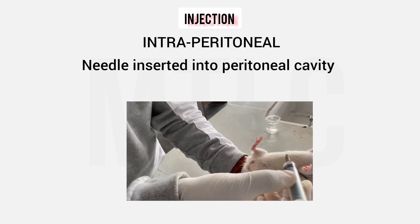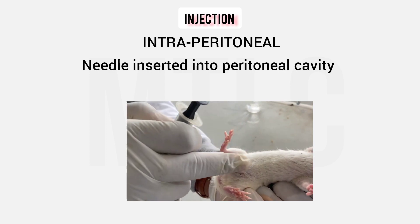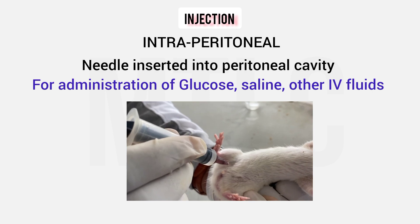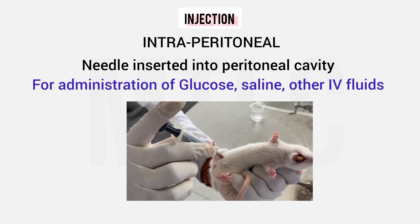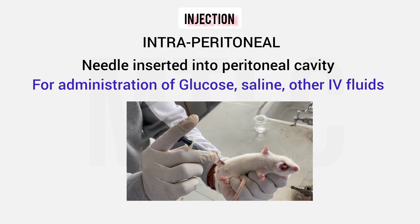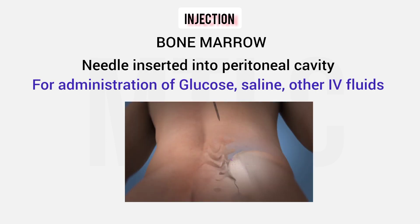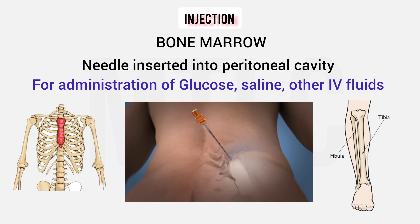Intraperitoneal injection places the drug in the peritoneal cavity. This route can be chosen when veins are not available for IV fluids. In such cases, intraosseous injection into the bone marrow is an option — adults use the sternum, while children use the tibia or femur bone.